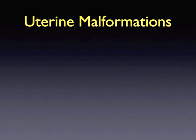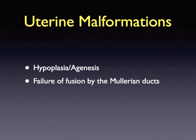Uterine malformations can be attributed to three main pathological origins. First, hypoplasia or agenesis, which leads to either the complete absence of the uterus or the formation of a unicornuate uterus. Secondly, failure of fusion by the Müllerian ducts, leading to either a didelphic or bicornuate uterus. Or finally, failure of resorption, leading to a septated uterus.